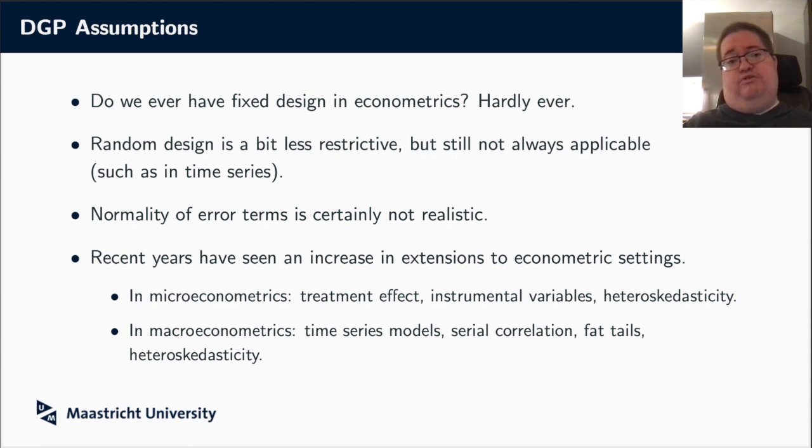Which of course translates to, does it still work as well in practice? Well, we should of course first think about what is unrealistic. Clearly fixed design is very unrealistic in almost any econometric application. We hardly ever have variables which can be deemed as fixed, except maybe for some experiments where the researcher controls the covariates. So of course we also looked at random design, that's a pretty standard assumption, but still random design in its basic form means that everything is IID, which is also still very restrictive for most econometric applications.